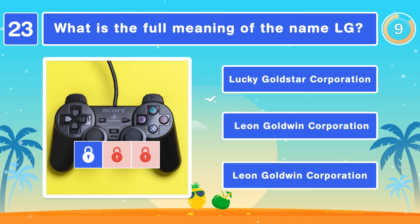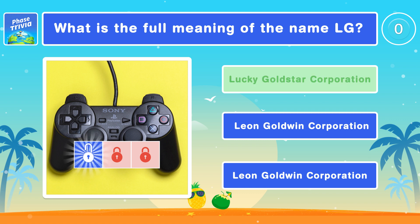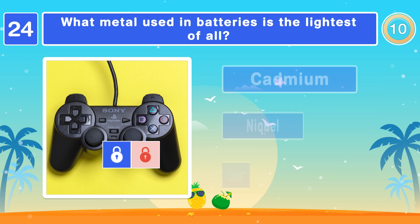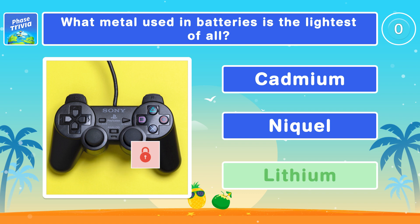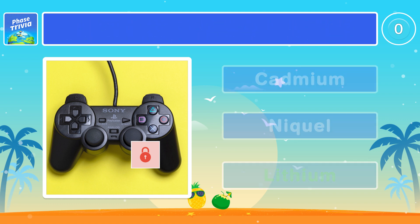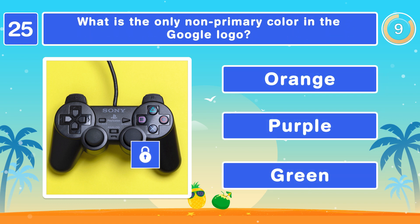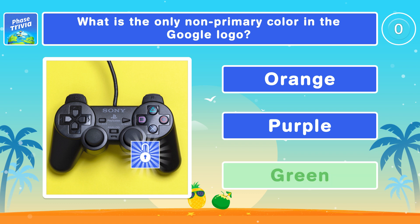What is the full meaning of the name LG? Lucky Gold Star Corporation. What metal used in batteries is the lightest of all? Lithium. What is the only non-primary color in the Google logo? Green.